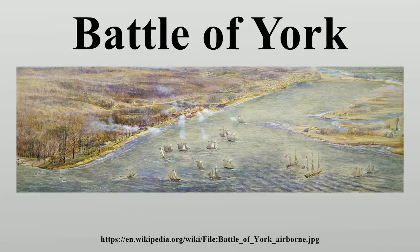Surrender: Colonel William Chewett and Major William Allen of the 3rd York Regiment of Militia tried to arrange a capitulation, assisted by Captain John Beverley Robinson, the Acting Attorney General of Upper Canada. The process took time. The Americans were angry over their losses, particularly because they believed that the ship and fort had been destroyed after negotiations for surrender had already begun. Nevertheless, Colonel Mitchell of the 3rd U.S. Artillery agreed to terms, while they waited for Dearborn and Chauncey to ratify the terms. The surrendered militia were held prisoner in a blockhouse without food or even medical attention for the few wounded. Forsyth's Company of the 1st U.S. Rifle Regiment was left as guard in the town. At this stage, few Americans had entered the town.